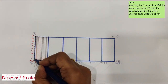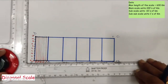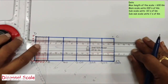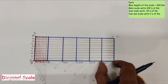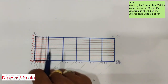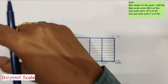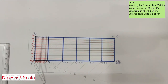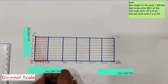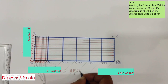Draw lines passing through 1, 2, 3, and the remaining divisions. The main scale units are in hundreds of kilometers, subscale units in tens of kilometers, and sub-subscale units in ones of kilometers. Now write the main scale units, subscale units, sub-subscale units, and the RF value — these labels are to be written in capital letters. The RF value is 1 : 4 × 10⁶.